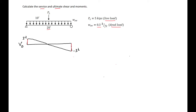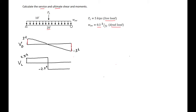For the live load shear, the 5 kip point load gives 2.5 kips to each support, so our left reaction is 2.5 kips. The shear remains constant at 2.5 kips until mid-span, where the applied load drops it 5 kips to negative 2.5 kips, and it stays at negative 2.5 kips until the right support reaction brings it back up.